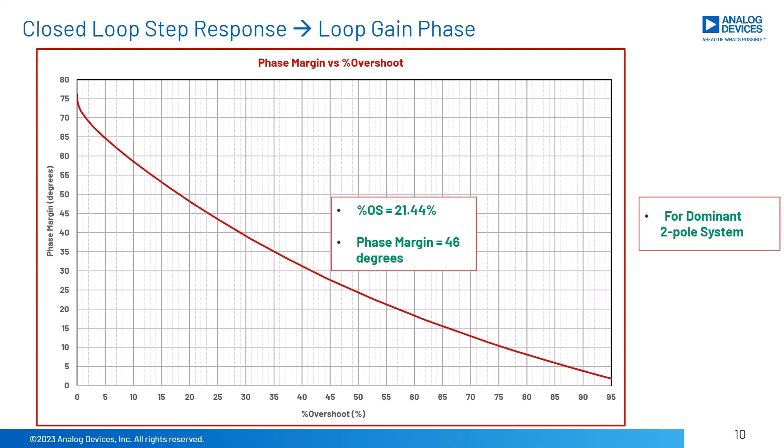Here is the handy phase margin versus percent overshoot plot for a dominant two-pole system. From our previous example, we saw percent overshoot equals 21.44%, which we read off the plot as 46 degrees of phase margin.